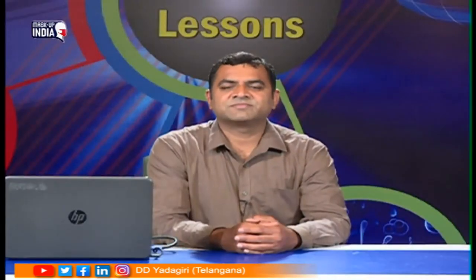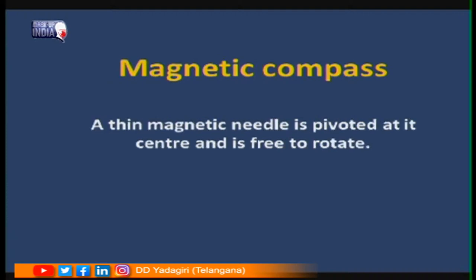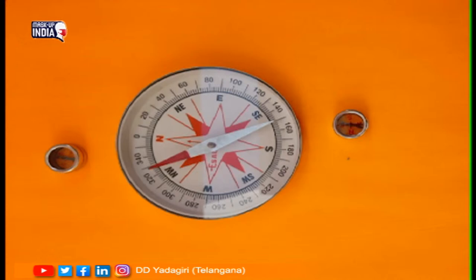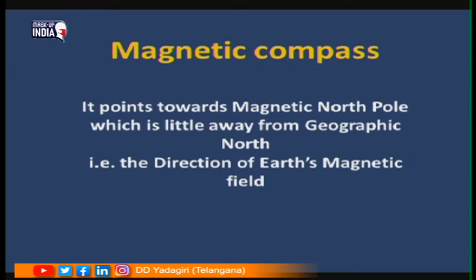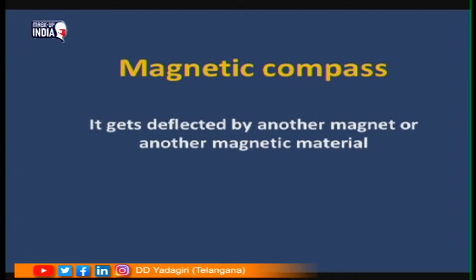A magnetic compass is a device that shows the north-south direction. A thin magnetic needle is pivoted at its center and is free to rotate. We have magnetic compasses in mobile phones too. It always points towards the magnetic north pole, which is a little away from geographic north — that is the direction of Earth's magnetic field. We can also make a magnetic compass using a bar magnet, and it gets deflected by another magnet or magnetic material.